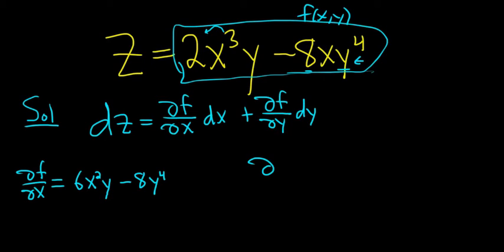Now we'll compute del f del y. So del f del y. Now we hold all of the x's constant. So we're just taking the derivative with respect to y. So in this first term up here, the 2x cubed hangs out, and the derivative of y is just 1. So we get 2x cubed.